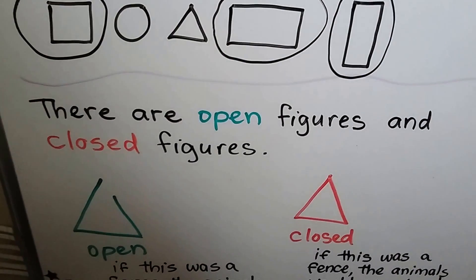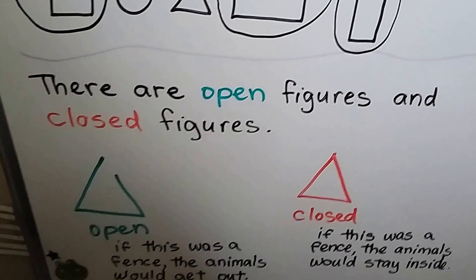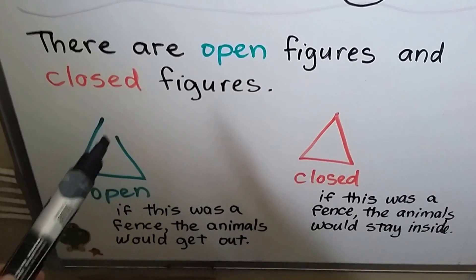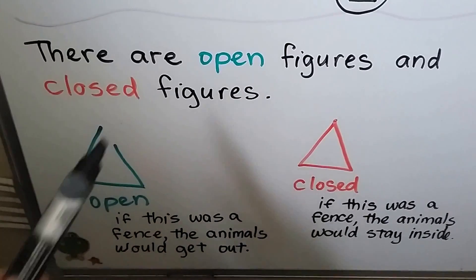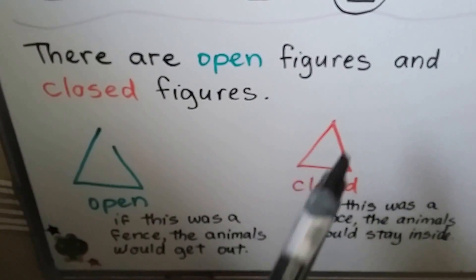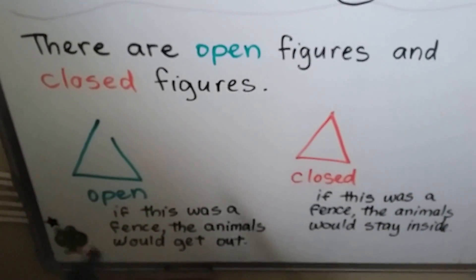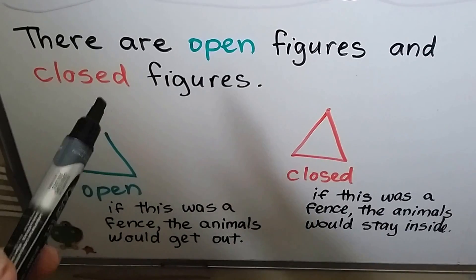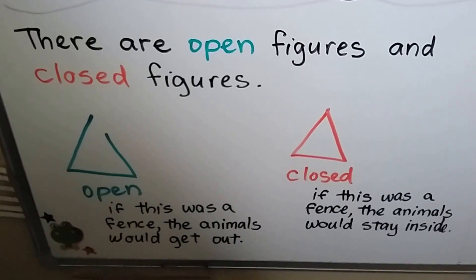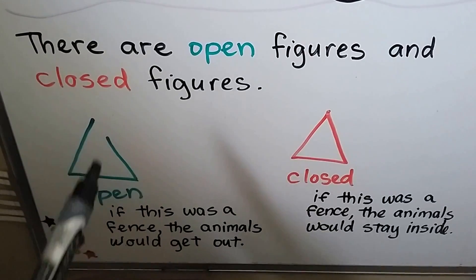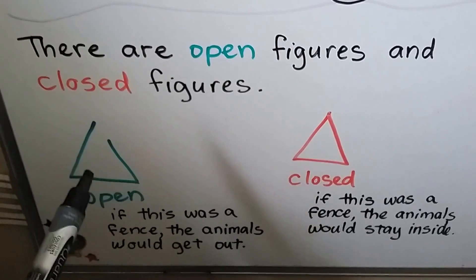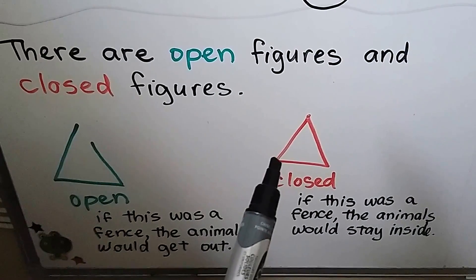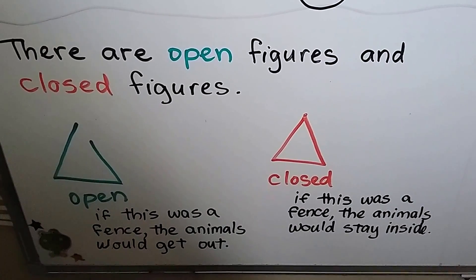Shapes are figures, and there are open figures and closed figures. An open figure would have an opening, and a closed figure would be all closed up. The open figure was open — and if this was a fence, animals would get out. If this were a fence, the animals would stay inside because it's closed.